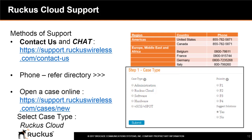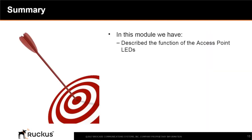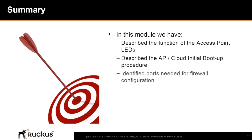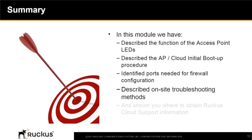If you open a case online, make sure you select the case type 'Ruckus Cloud.' In this module, we have described the functions of the access point LEDs, described the AP and cloud initial boot-up procedure, identified ports needed for firewall configuration, described on-site troubleshooting methods, and shown you where to obtain Ruckus Cloud support information.